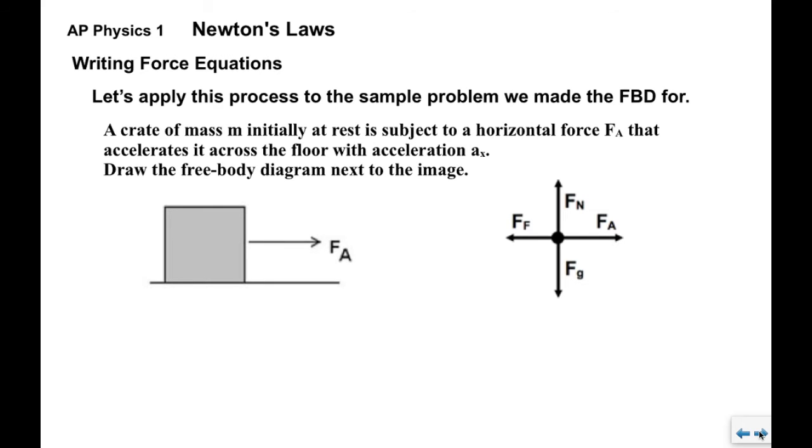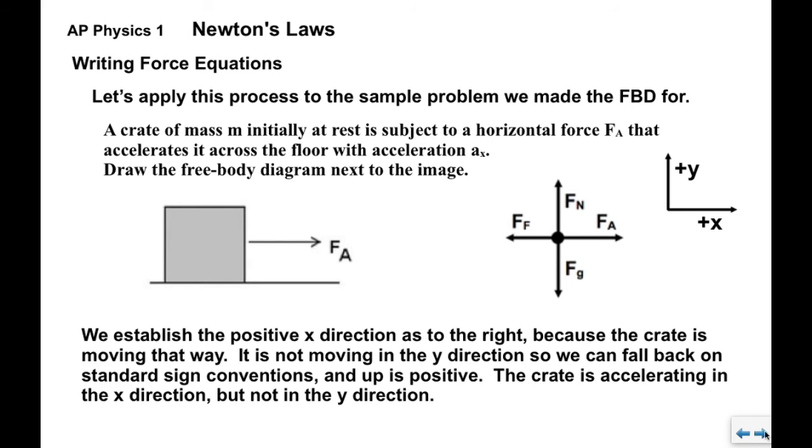So here was our first example of drawing a free body diagram. We have a crate of mass m initially at rest, subject to a horizontal force Fa that accelerates it across the floor. We drew the free body diagram already. We're going to establish the positive x direction to the right because that's the way the crate is moving. It's not moving vertically, so we fall back on standard sign conventions: up is positive, down is negative. This crate is accelerating horizontally but not vertically.